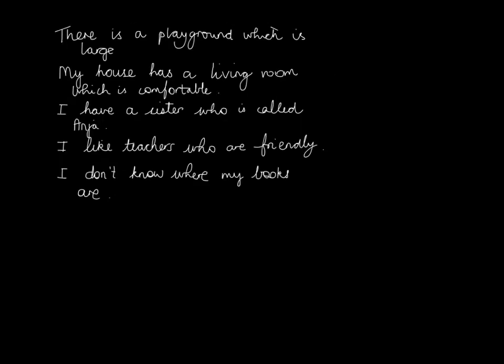We're going to replace the which, who, and where in these sentences with a relative pronoun in German. The first step is to look at the word which precedes — in other words, is before — the which, who, and where. So in the first case: a playground. In the second case: a living room. In the third case: a sister. In the fourth case: teachers. And the fifth case is slightly different.